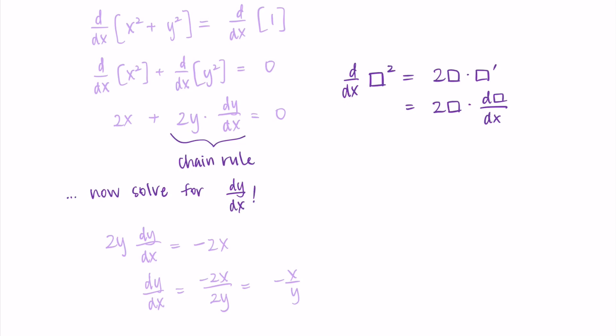Now you might be thinking that doesn't look like what we got before — our earlier result had a bunch of square roots in it. Well, we can do one more step if we want: solve for y, getting y equals plus or minus the square root of 1 minus x squared, and then replace y with that. Now we have a derivative that looks like what we got using the slow method. But what is nice about implicit differentiation is that it allows us to find the derivative without needing to do all that work. We can just say dy/dx equals negative x over y — much simpler than having all those square roots.